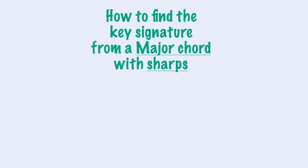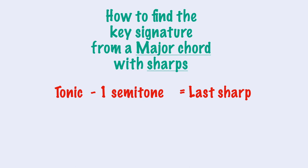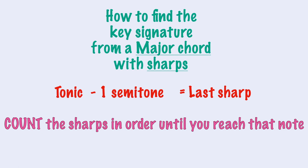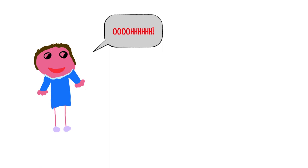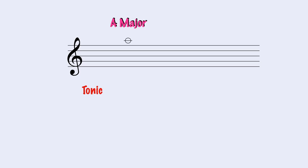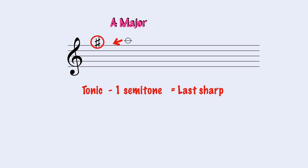If we have the key chord and need to identify the key signature, take the name of the chord — that would be our tonic — go down a semitone, and that note is the last sharp of our key signature. Then we write or count the sharps in order until we find ours. For example, if we want to know how many sharps A major has, we go down a semitone and find G sharp. This will be our last sharp in the key signature. So we keep writing until we have G: Fa Do Sol. A major has three sharps.